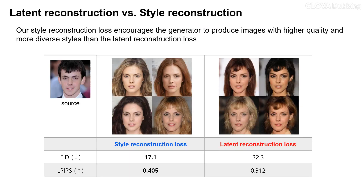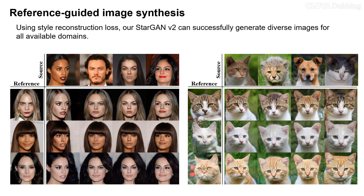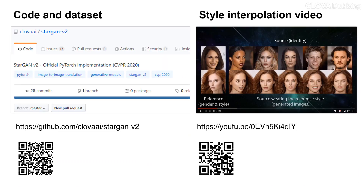Our style reconstruction loss enables the generator to produce images with more diverse styles than latent reconstruction loss. Using style reconstruction loss, our StarGen V2 can successfully generate diverse images for all available domains. For more details, please visit our website.